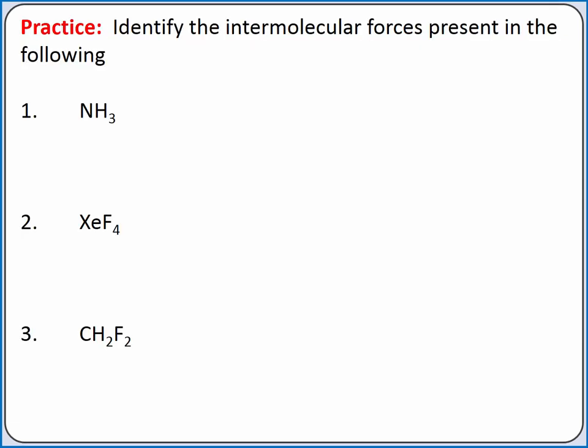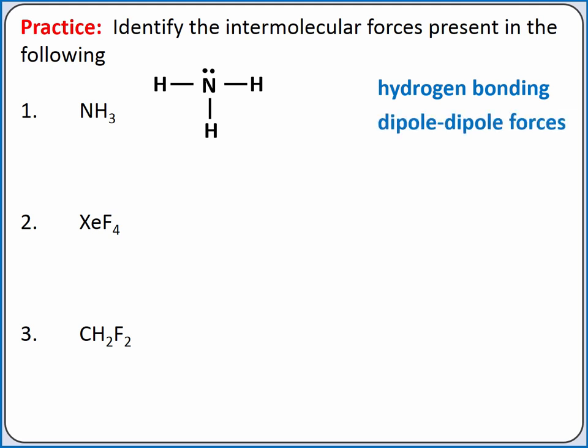Let's practice identifying intermolecular forces. We'll start with the Lewis structure for ammonia, NH3. We have a hydrogen atom directly bonded to a nitrogen atom, so hydrogen bonding is present. Ammonia is a polar molecule, so there are also dipole-dipole forces between two ammonia molecules. And we have dispersion forces between all atoms and molecules.